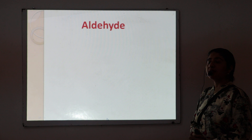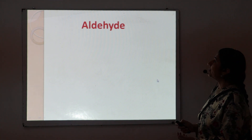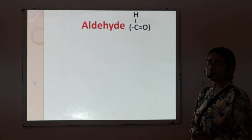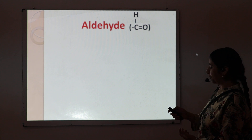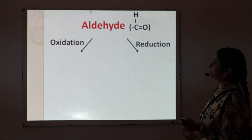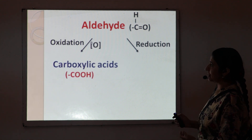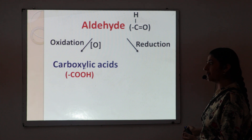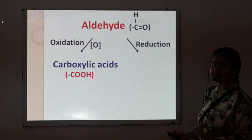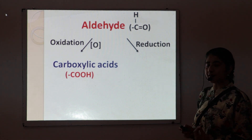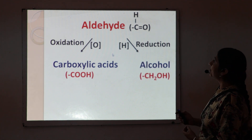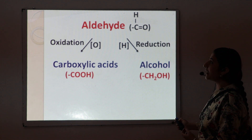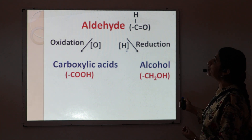In this reaction, we use aldehyde as the main reactant, which contains the carbonyl CHO group. Since the Cannizzaro reaction is an example of a disproportionation reaction, the aldehyde molecule undergoes both oxidation and reduction. In oxidation, there is an addition of oxygen, so the CHO group is converted to a carboxylic group — that is, aldehyde is converted into a carboxylic acid. In reduction, there is an addition of hydrogen, so the aldehyde group is converted to an alcohol. Carboxylic acid is the oxidized product of aldehyde, whereas alcohol is the reduced product of aldehyde.